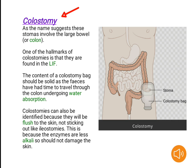Colostomy. As the name suggests, these stomas involve the large bowel or colon. One of the hallmarks of colostomies is that they are found in the left iliac fossa. The content of a colostomy bag should be solid, as the feces have had time to travel through the colon undergoing water absorption. Colostomies can also be identified because they will be flushed to the skin, not sticking out like ileostomies. This is because the enzymes are less alkali, so should not damage the skin.